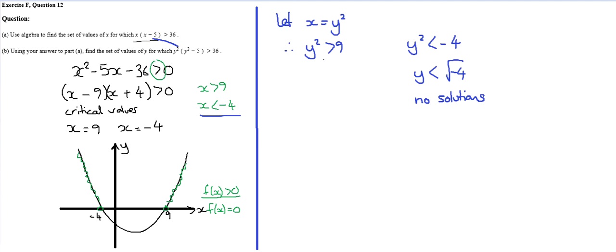And here, you've got to be really careful. It's what values squared are bigger than 9. So therefore, y must be bigger than 3, because 3 squared is 9. It's got to be more than 9, so 4 squared and so on.